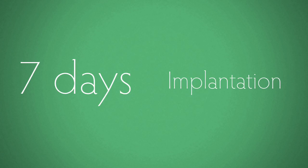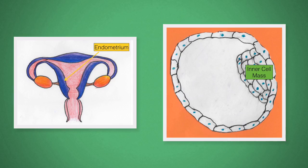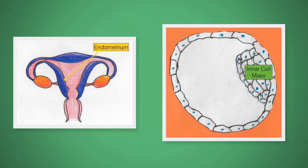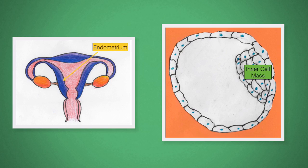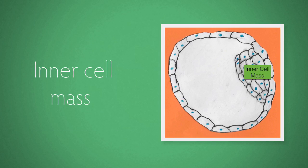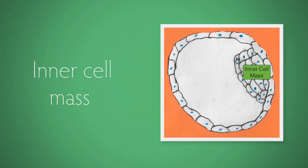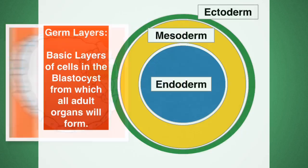Approximately 7 days after fertilization we have implantation. This is when the blastocyst burrows into the lining of the womb, the endometrium. At this stage the lady is said to be pregnant. The blastocyst has this inner cell mass, a clump of cells that is eventually going to give rise to the baby.